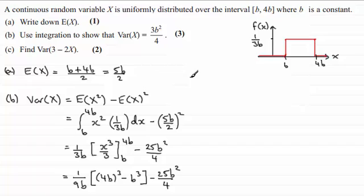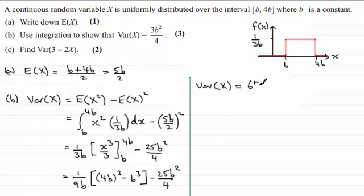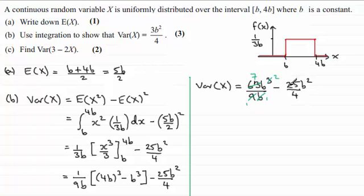Carrying this on: the variance of x equals — we've got 4b cubed minus b cubed, that's 64b cubed minus b cubed, which is 63b cubed, all divided by 9b, and then minus 25b squared over 4. Cleaning this up, the b cancels into b cubed leaving b squared, and 9 cancels into 63 seven times. So we've got 7b squared minus 25 over 4 b squared. Now 7b squared is 28b squared over 4, so 28 quarters minus 25 quarters leaves 3 quarters, multiplied by b squared. And that's what we had to show.